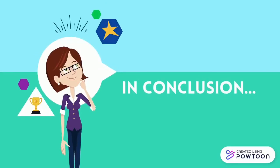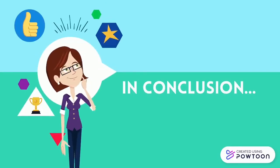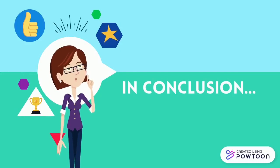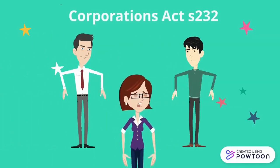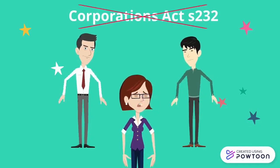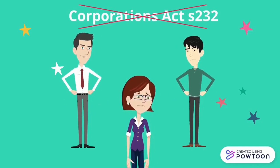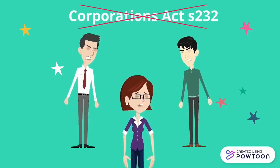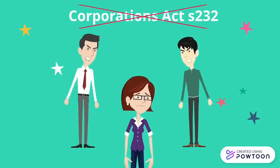Now that we have highlighted the relevant facts, identified legal issues, relevant law, and applied the law, it is time to make our concluding statements. Conclusively, through the application of the objective test, it is found that Peter and George, although acting within their rights established in the company's constitution, were in breach of Section 232 of the Corporations Act.